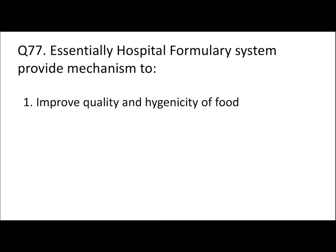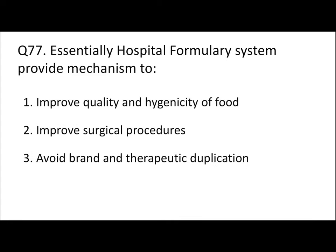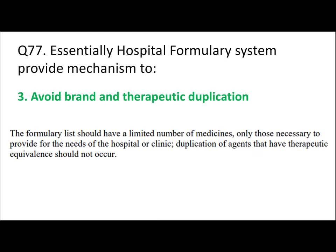Question 77: Does the hospital formulary system essentially provide a mechanism to improve quality and hygienicity of food, improve surgical procedures, avoid brand and therapeutic duplication, or streamline prescription writing? The hospital formulary system refers to the pharmacy section and is used to provide a mechanism to avoid brand and therapeutic duplication. The formulary list should have a limited number of medicines necessary for the hospital or clinic, and duplication of agents should not occur.